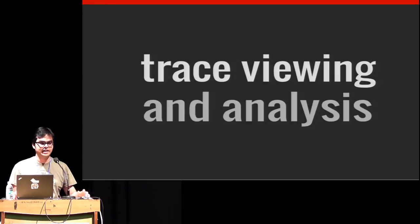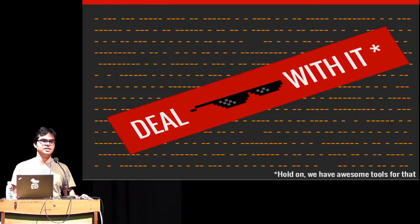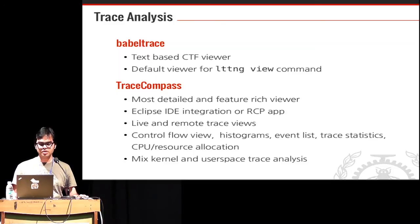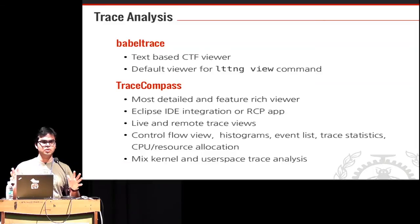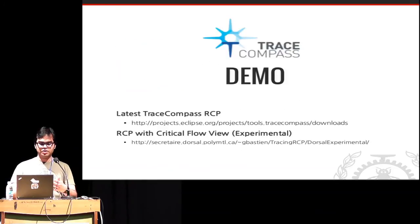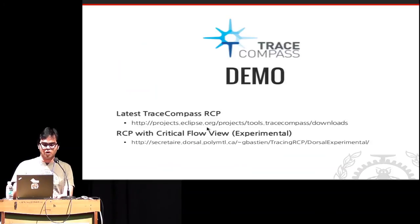With millions of events being generated we need to make sense of the data. For CTF data used in LTTNG, the default viewer is babeltrace. The most comprehensive tool is Trace Compass — an Eclipse-based tool with an RCP, supporting live views, remote views, and very detailed analysis. There's also an experimental critical flow view done by my colleague Francis Giraldeau, giving you the critical path of what your processes were doing.